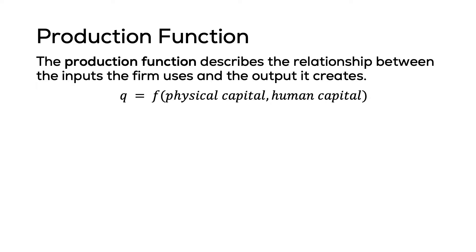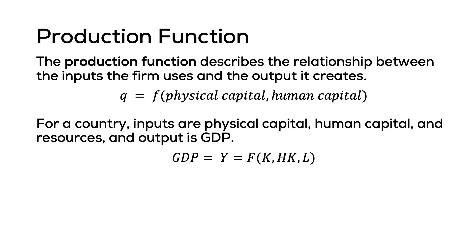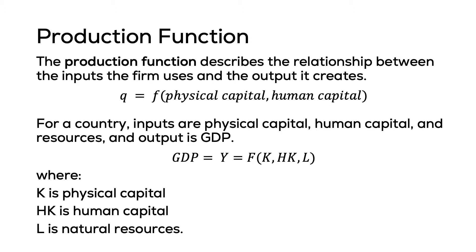In the context of a country, inputs are summarized as physical capital, human capital, and natural resources, and the output is GDP. We can abbreviate it as: GDP is a function of K, which represents physical capital, and HK, which represents the amount of human capital. This is how we simplify our country's production.